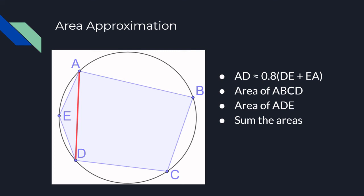We then calculate the area of the cyclic quadrilateral and triangle using the approximated side length and sum them. This results in a fairly good approximation of the area of the pentagon, which allows us to choose the correct root in almost all cases.